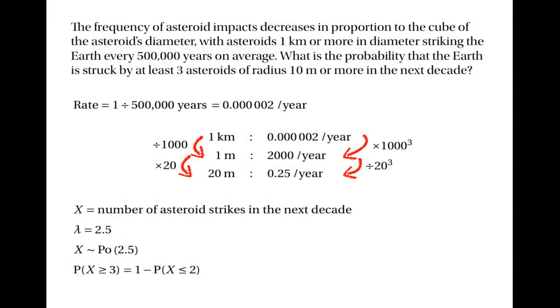So the probability that we're looking for will be 1 take away 0.5438, which is 0.4562.